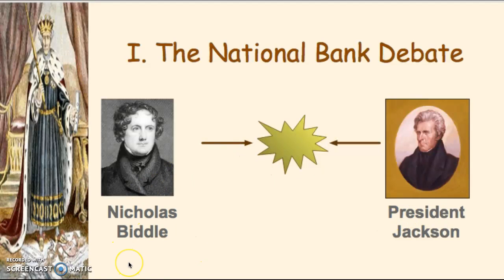Nicholas Biddle started a process of holding banknotes to stabilize the economy. Banknotes, if issued with restraint, keep the economy going well, but they were being issued recklessly to people who might not pay off the debt. Biddle collected banknotes hoping that hard specie currency — gold and silver — would predominantly be used in the economy. There was no uniform currency at the time; greenbacks would come later. Looking ahead to the election of 1832, the National Republicans decided to push the rechartering of the National Bank five years early as a political issue.